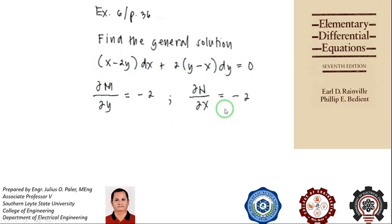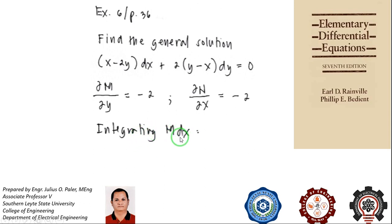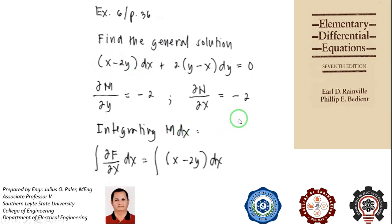Like equations with modulus coefficients, there are actually two solutions and we will start with the first one. You can start by integrating M dx. Since you have a y variable, when you integrate M dx, y is a constant. Remember that M is the partial derivative of f with respect to x, so the integral of M dx is the integral of x minus 2y dx, with y treated as a constant.